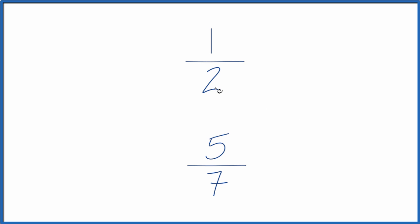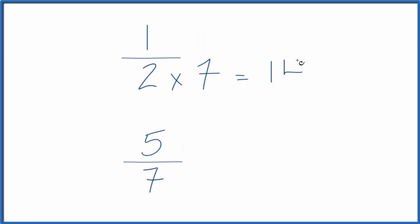So let's do this. Let's multiply 2 times 7. 2 times 7 equals 14. And then down here, let's multiply 7 times 2. 7 times 2, that equals 14 as well. So we have our common denominator.